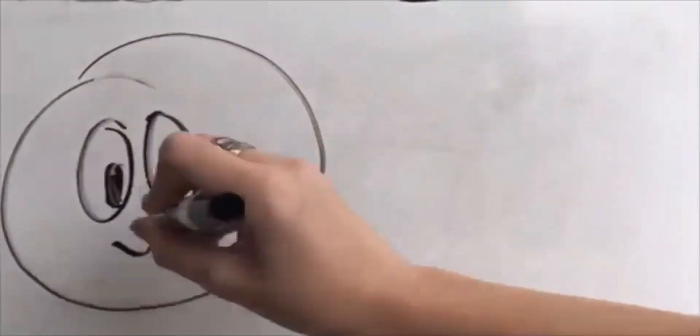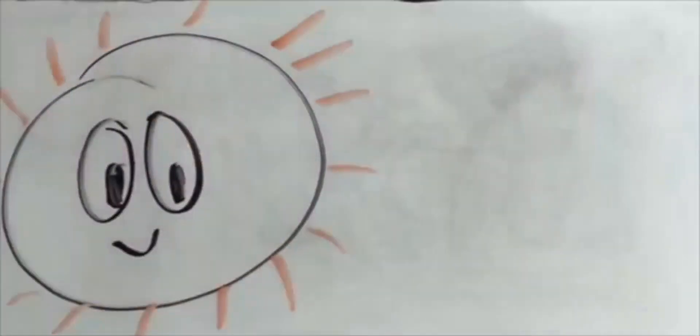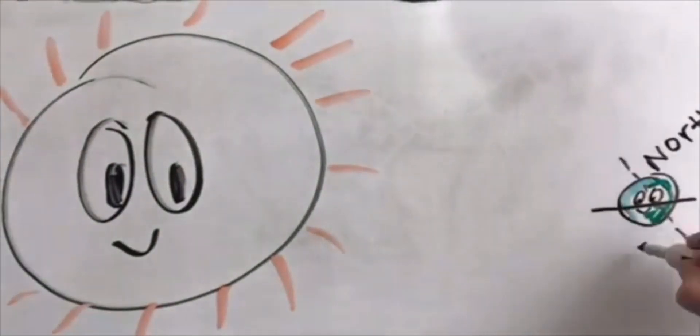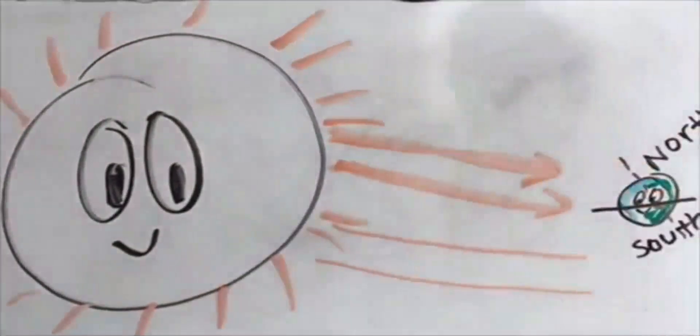When my rays travel towards you, they hit both the northern and the southern hemispheres. If the northern hemisphere is tilted towards me, then it will get my direct rays and it will create more heat, causing summer for anyone living there.